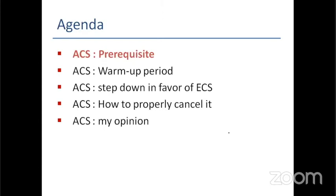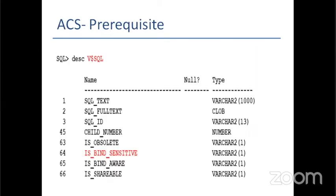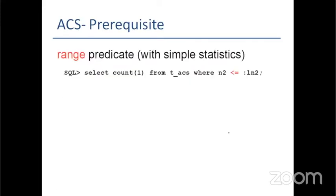The first step is to look at what are the prerequisites to be elected for adaptive cursor sharing. A cursor needs to be bind sensitive. To be bind sensitive, it needs to use bind variables — either directly or through setting the cursor_sharing parameter to force. The bind sensitive property has been externalized in the V$SQL view as shown in the current slide.